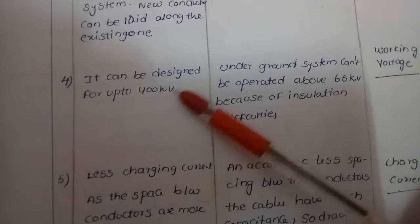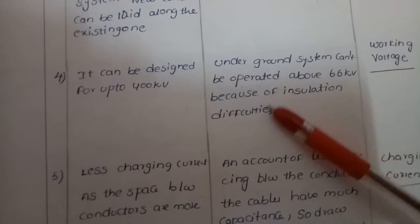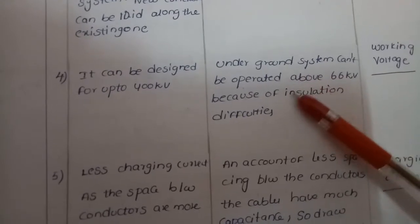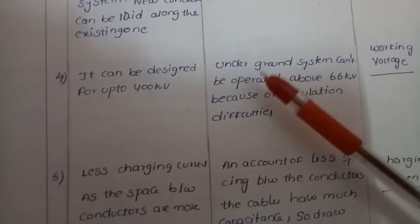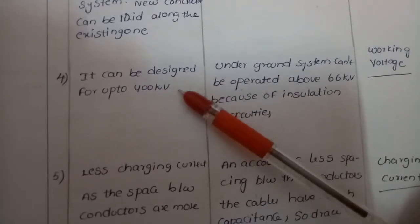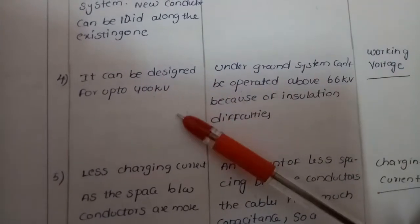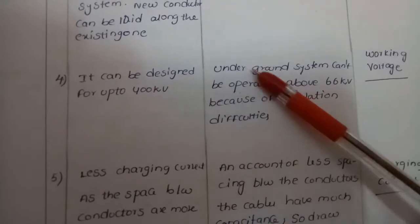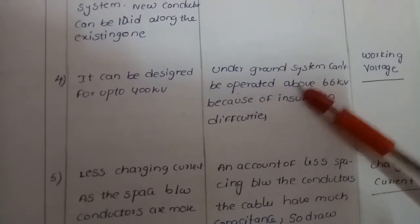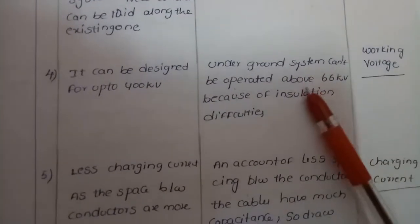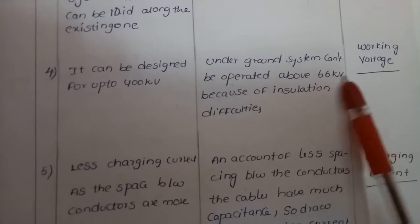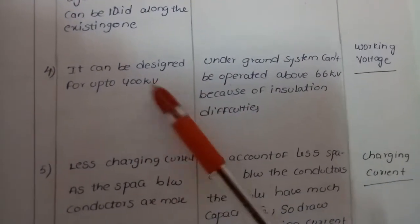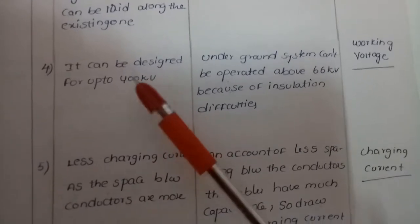Regarding working voltage, overhead systems can be operated up to 400 kilovolts, while underground systems cannot be operated above 66 kilovolts because of insulation difficulties. In overhead systems, more gap can be provided between lines to increase insulation, but in underground systems it is very difficult to provide insulation beyond 66 kV.